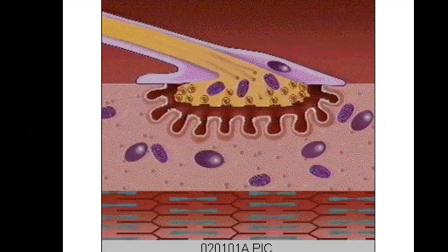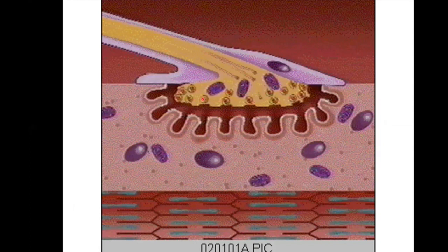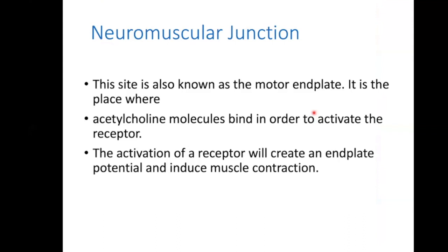At the post-junctional events, the nerve membrane and the post-synaptic muscle membrane are separated by synaptic clefts. Receptors are situated here to increase surface area. This site is also called the motor end-plate where acetylcholine molecules bind to activate the receptor. Activation creates an end-plate potential and induces muscle contraction.